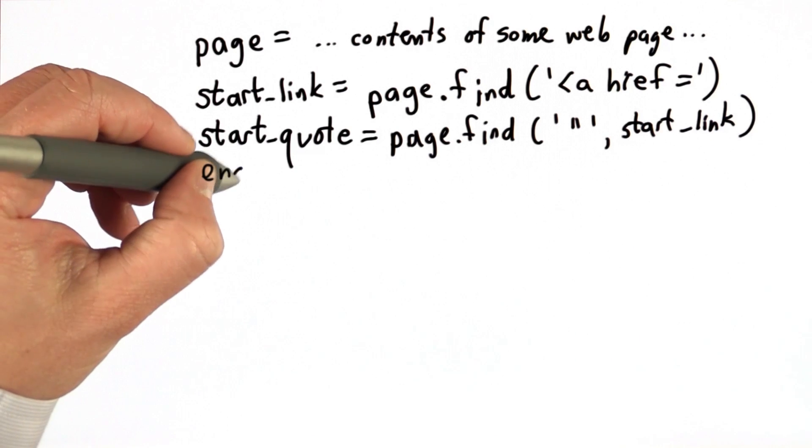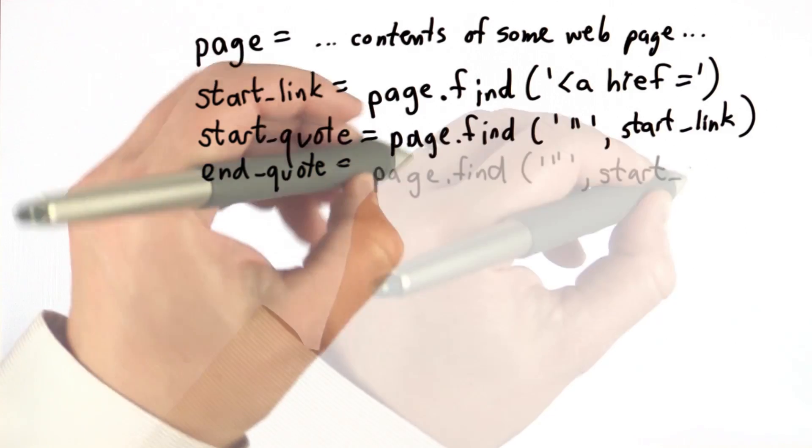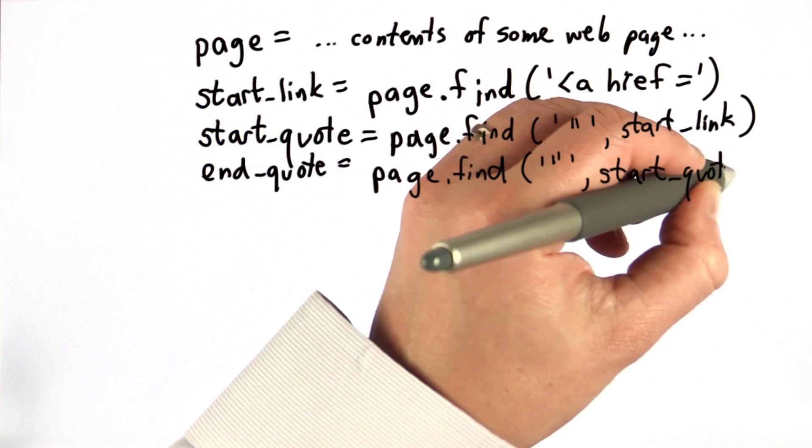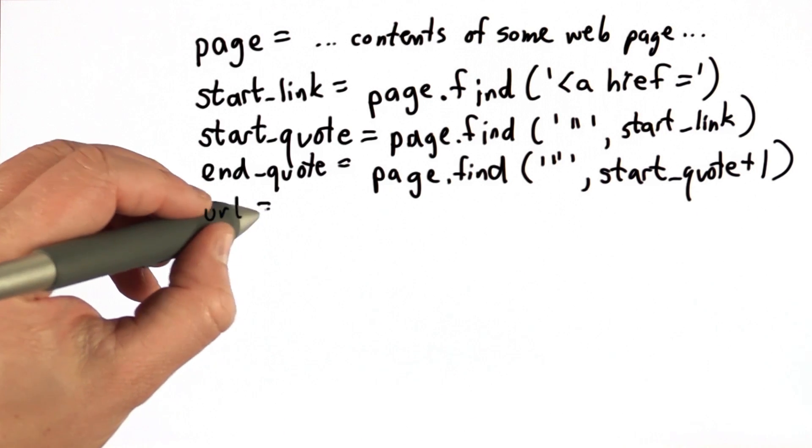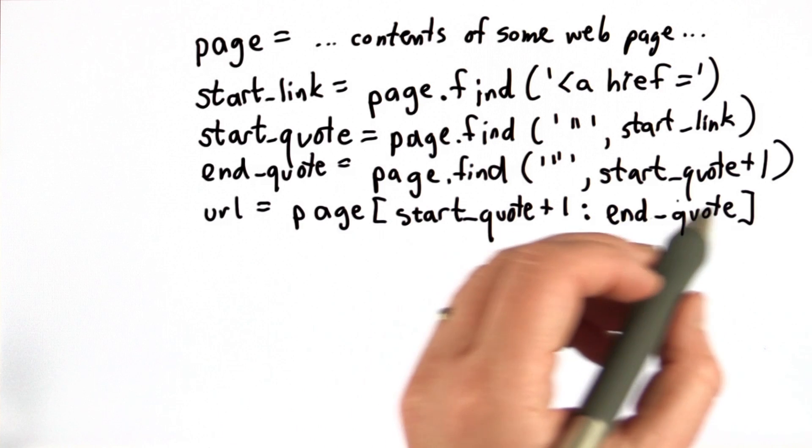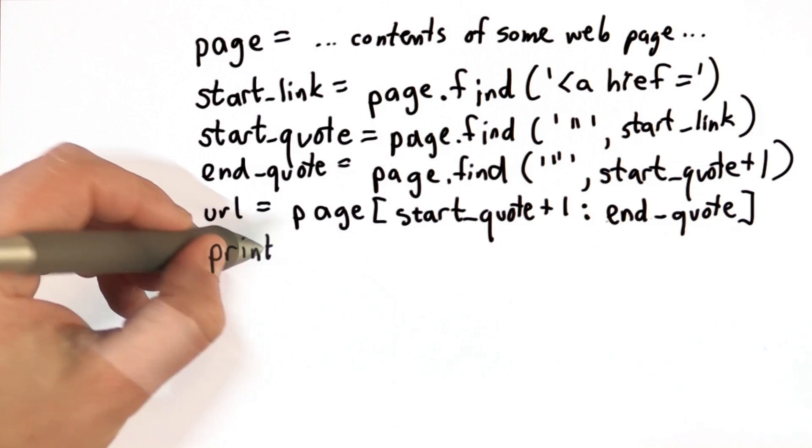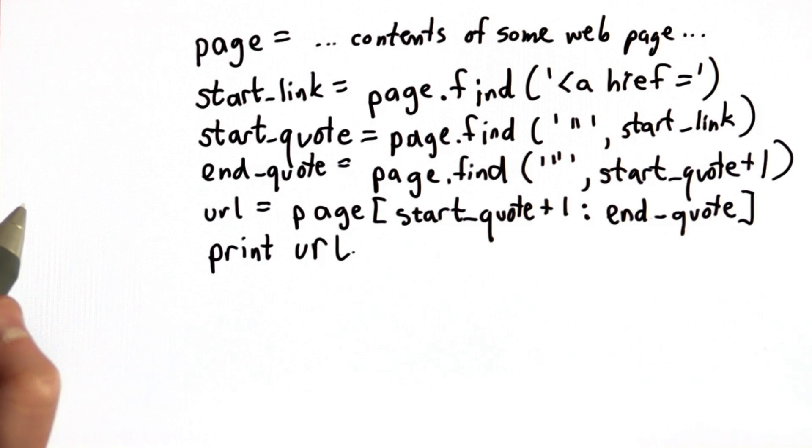Then we initialized the variable end quote to the result of invoking find on page, to find the first quote following the start quote. And then we assigned to the variable URL, extracting from the page from the character after the start quote to the character just before the end quote. We could print out that URL. And this worked to find the first URL on the page.